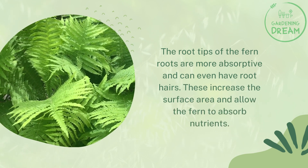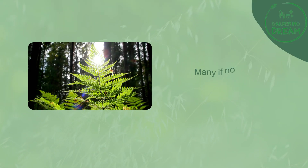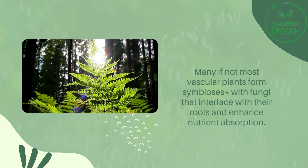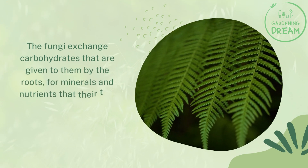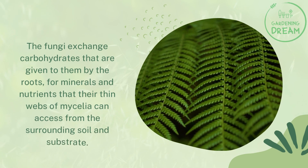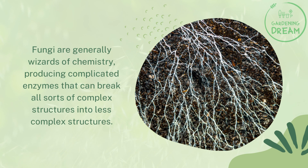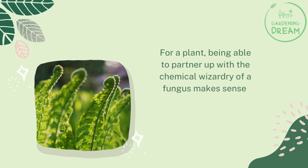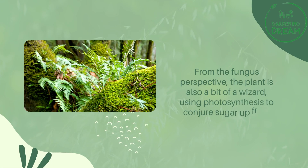Root hairs increase the surface area and allow the fern to absorb nutrients. Many, if not most, vascular plants form a symbiosis with fungi that interface with their roots and enhance nutrient absorption. The fungi exchange carbohydrates given to them by the roots for minerals and nutrients their thin webs of mycelia can access from the surrounding soil. Fungi are generally wizards of chemistry, producing complicated enzymes that can break complex structures into less complex ones.